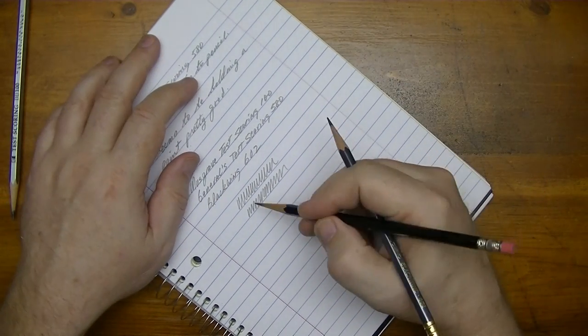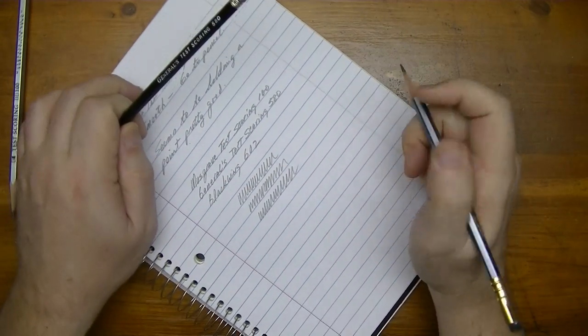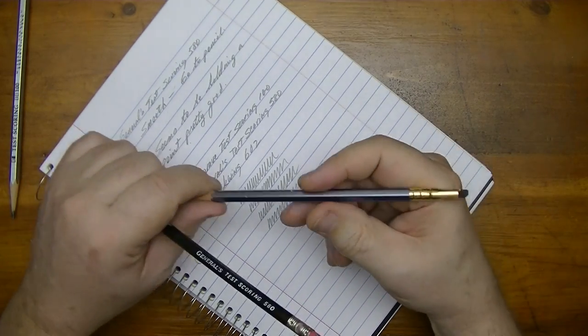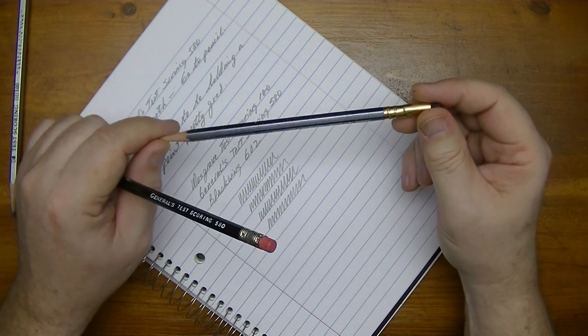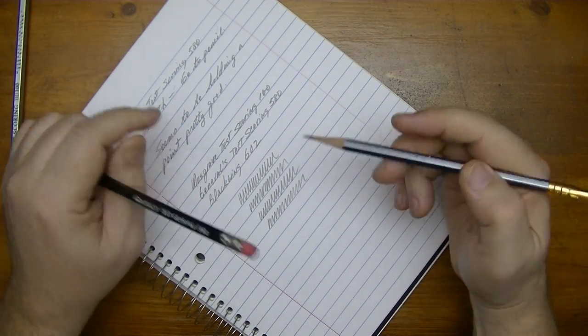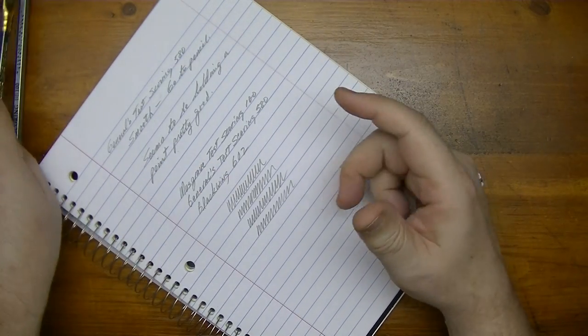Hmm. Well, the Blackwing 602 slightly smoother feel to it, in my opinion. It does seem to be lighter. And I'm going to verify that in a moment here.